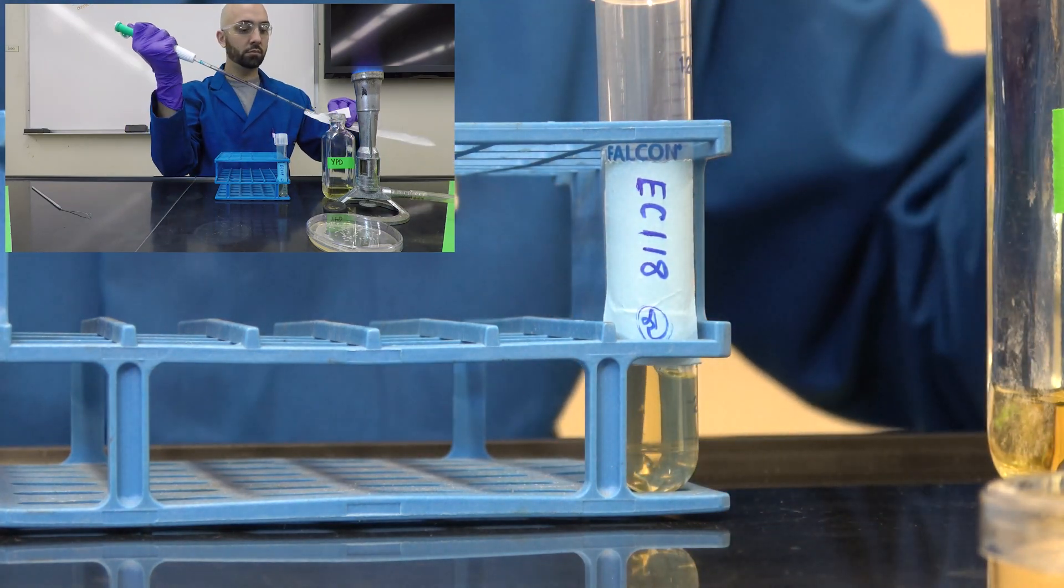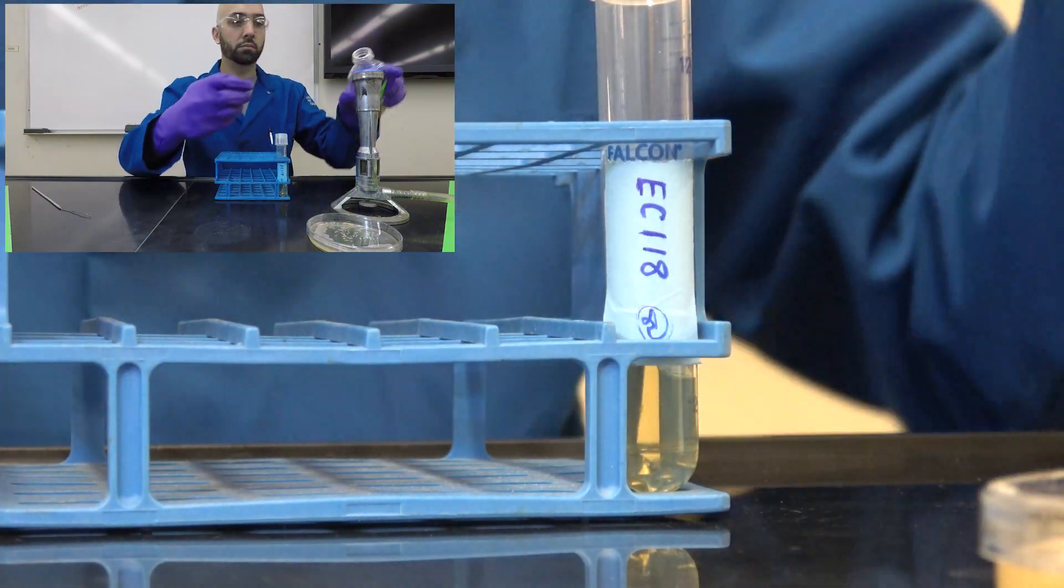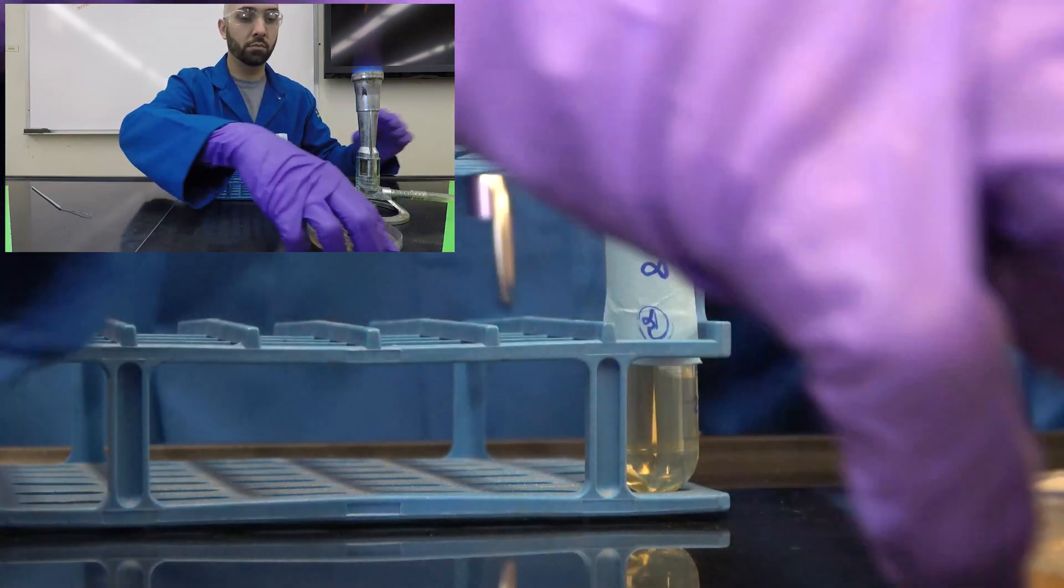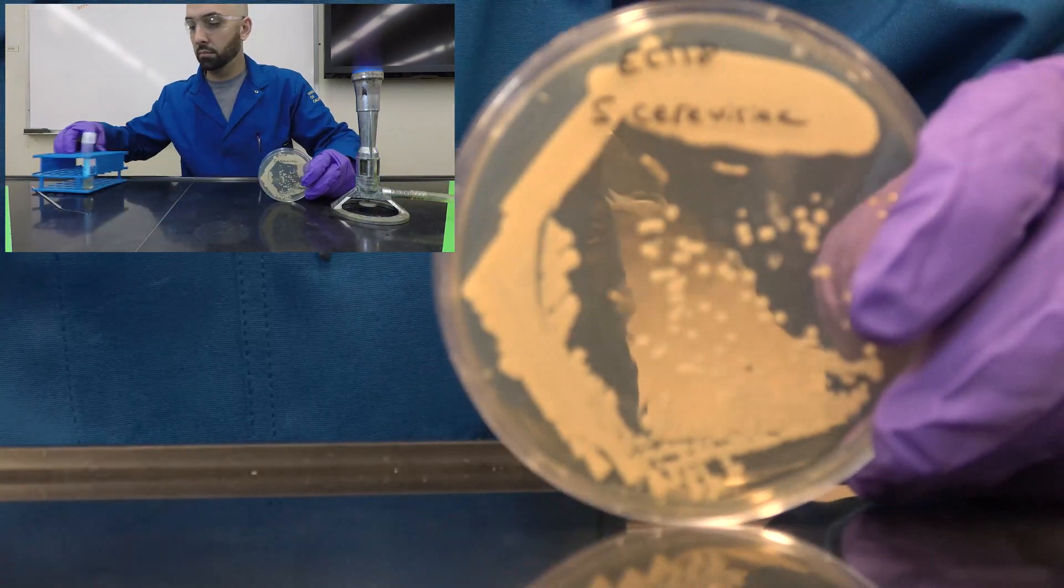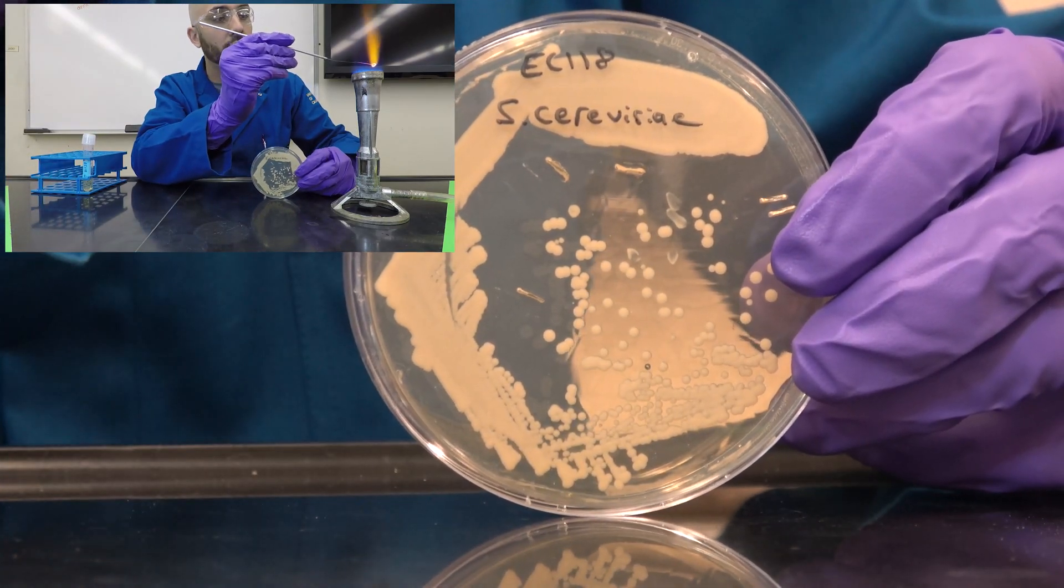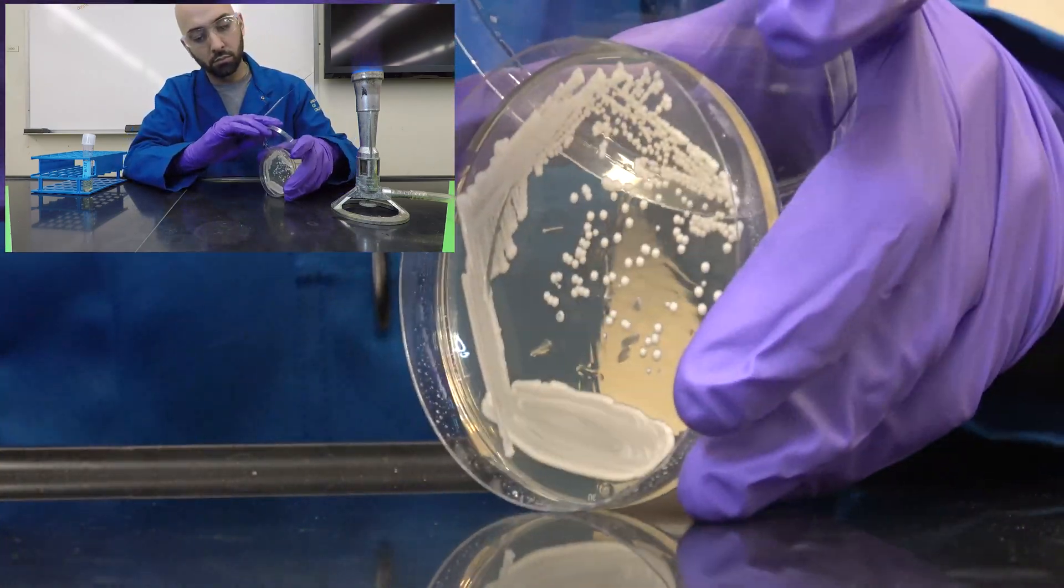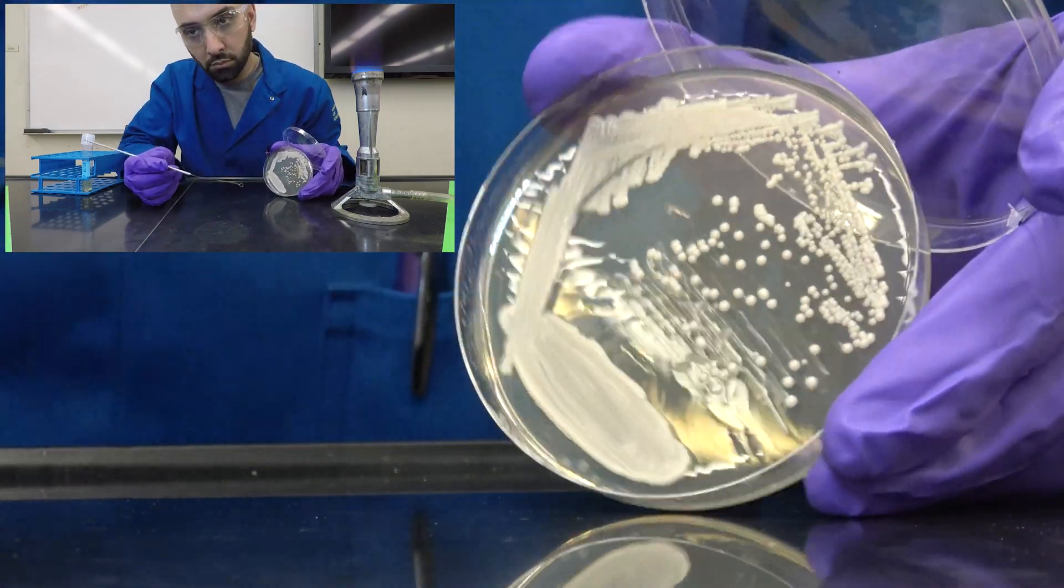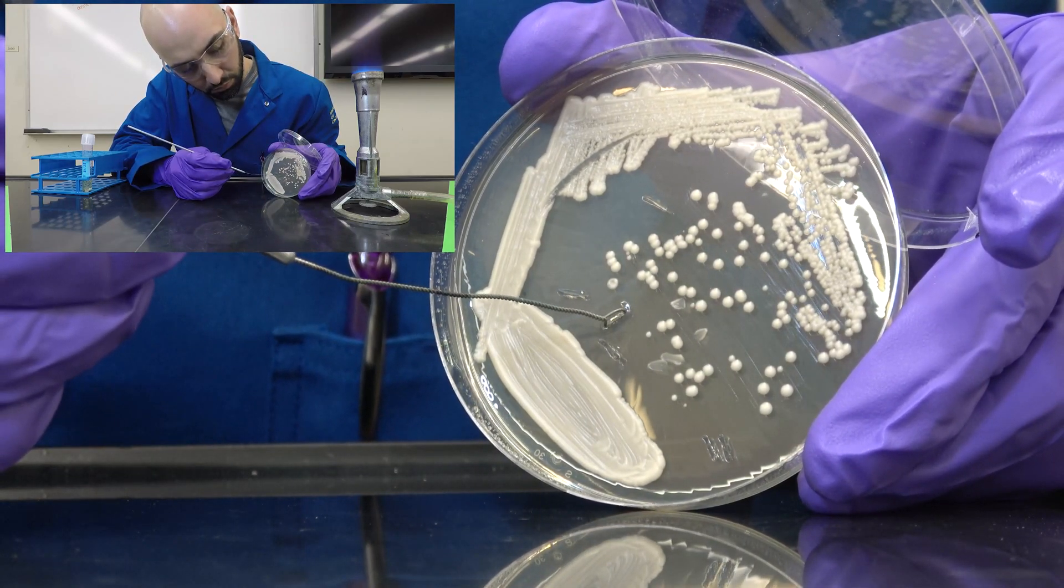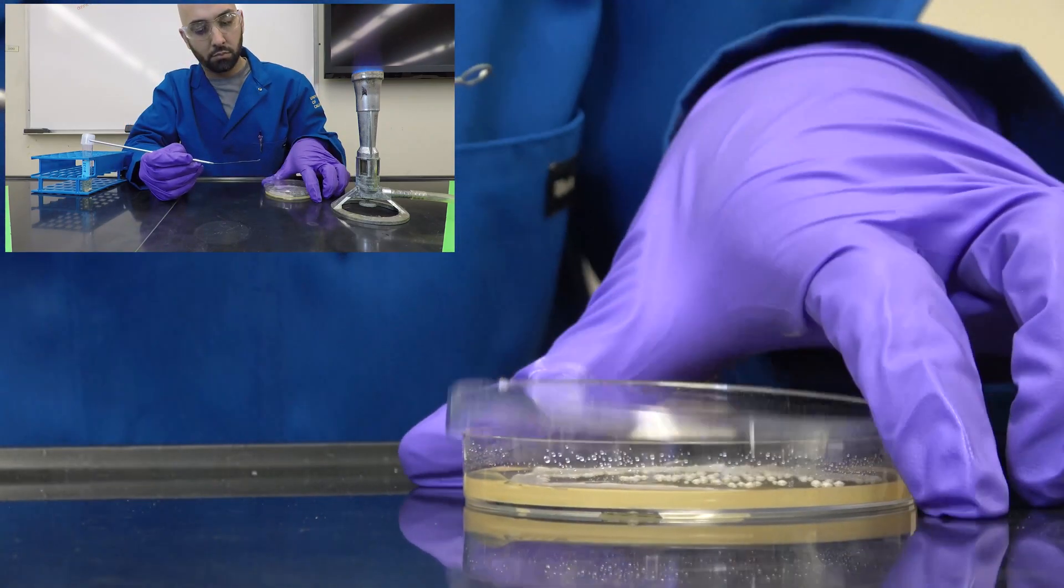When finished, I'll again flame the mouth and lid before closing the stock bottle. I'll flame sterilize the inoculation loop and search for a single colony. Prior to removing this colony, plunge the loop into the agar to completely cool the metal. It's important to pick a single colony and then keep the lid on the yeast when done.